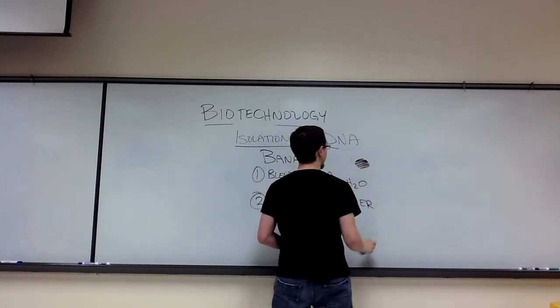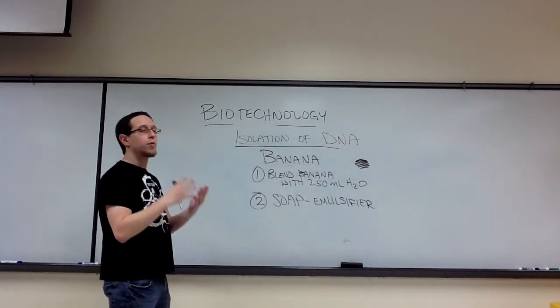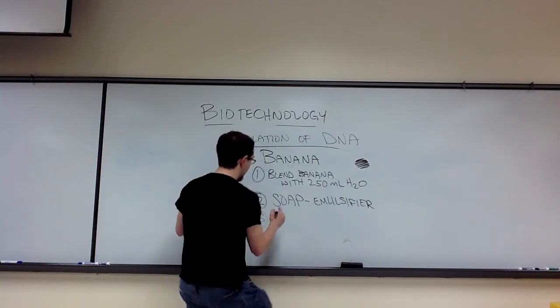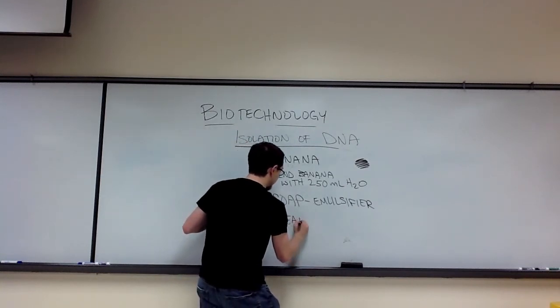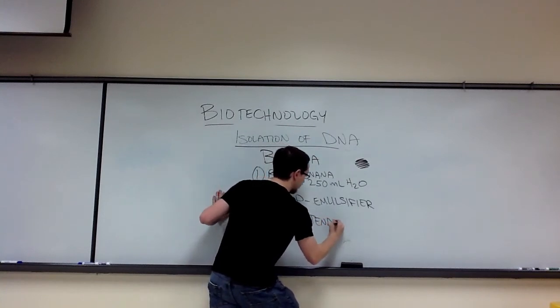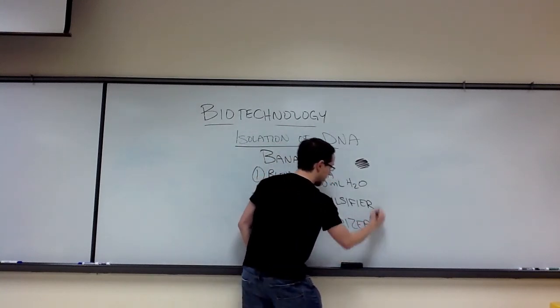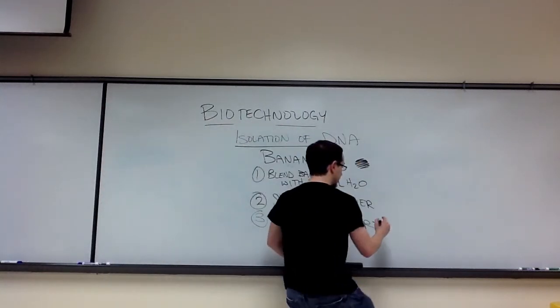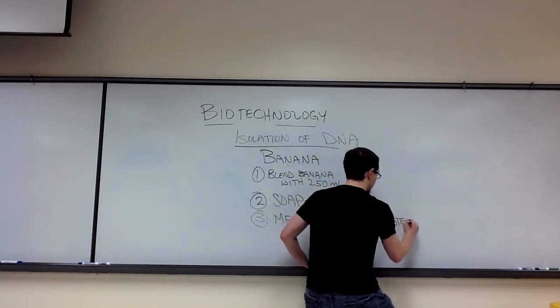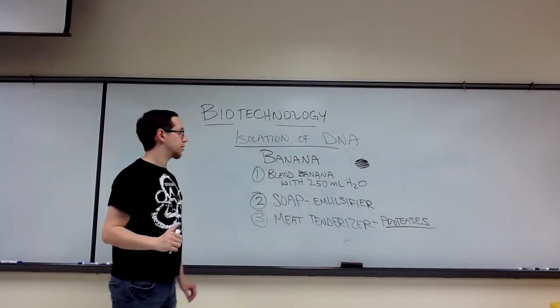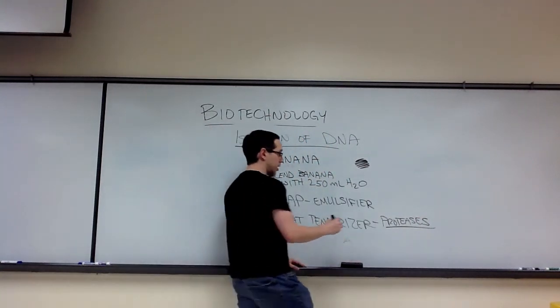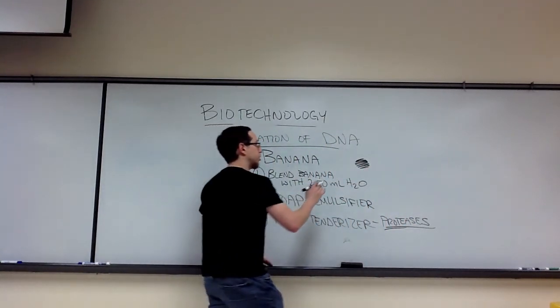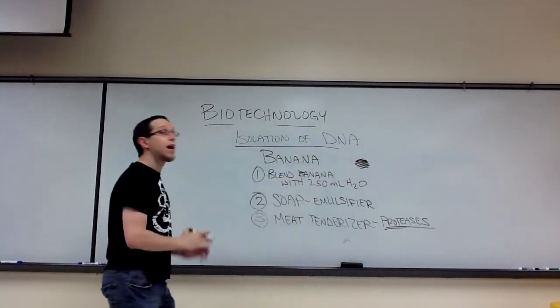But again, remember, proteins can be bound to the DNA. So we need to use another particular solution, and that solution is meat tenderizer. Okay, so we're going to use meat tenderizer, because meat tenderizer contains specific enzymes called proteases. Those proteases are going to assist us. They're enzymes that specifically bind to proteins, and they're going to assist us in disrupting the interaction between those proteins that are bound to the DNA and the DNA itself.